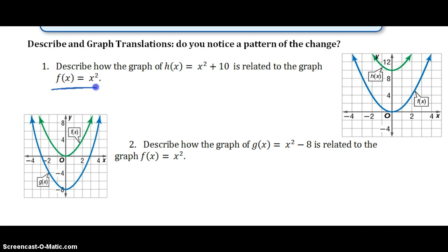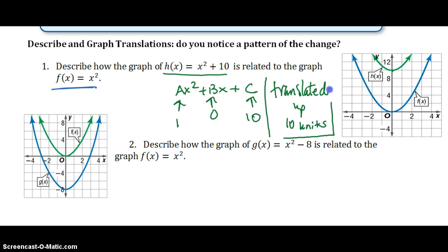So again, f of x is your parent graph, and here it is in blue. And they're wanting us to graph this function, this parabola, and it wants to know how is it related to the parent graph. Well, from the parent graph in blue, we have translated up to 10, because in ax squared plus bx plus c, b must have been 0, a is understood to be 1, and our c turns out to be 10. And so we moved up to 10. So how did it translate? You'll say it translates up 10 units. That's the answer to this question.